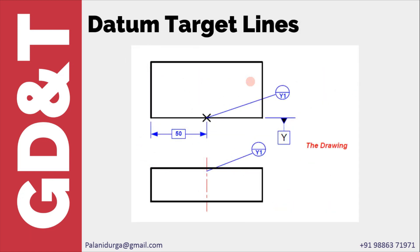The next one is datum target lines. This is the representation of datum target line. You put a line on one view and an X mark in the second view. If you see on both the views, Y1 is the identification number.